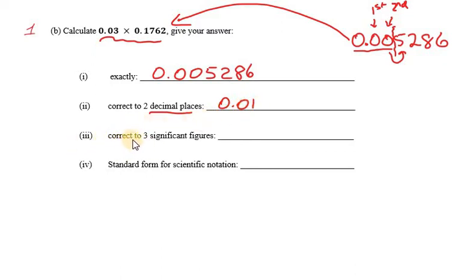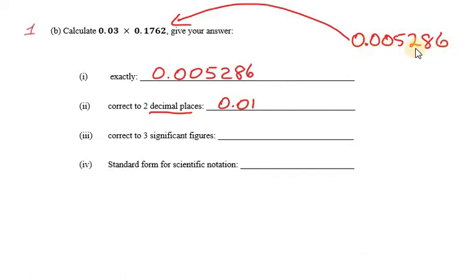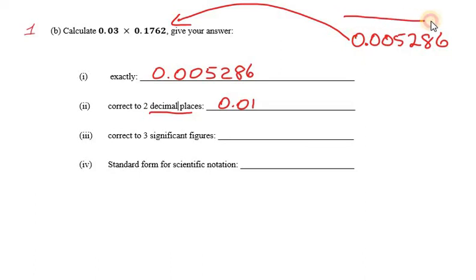Let's move on to correcting the original exact answer to three significant figures. With significant figures, we look at the number 0.005286. Significant figures are counted from the first non-zero digit onwards. Going from left to right, the first digit that's not 0 is the 5. So this is our first significant figure.